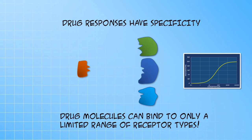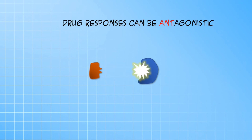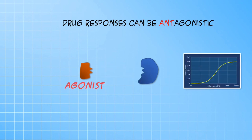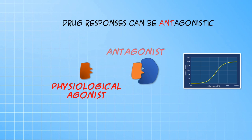When a drug molecule directly initiates a response, that molecule is called an agonist. Not all drugs however are agonists. Some drugs act by binding to a receptor and preventing an endogenous physiological agonist from producing its physiological effect. Such drugs are called antagonists.